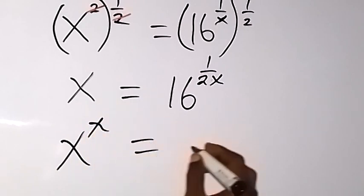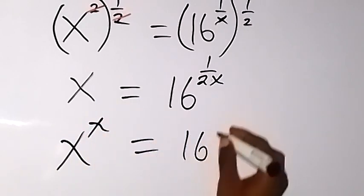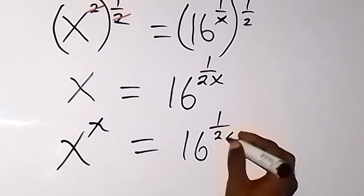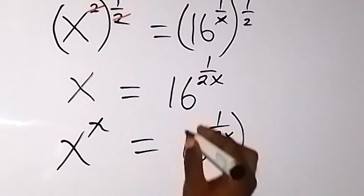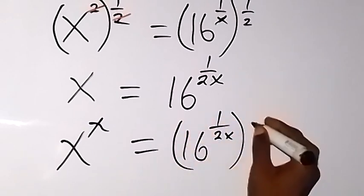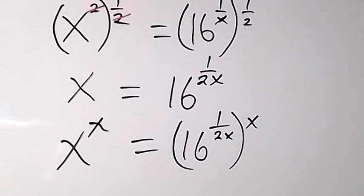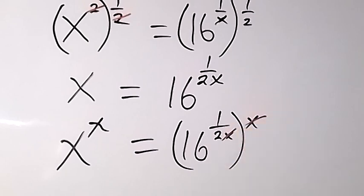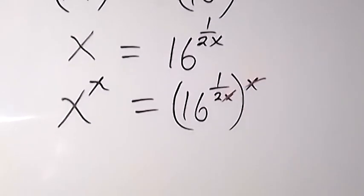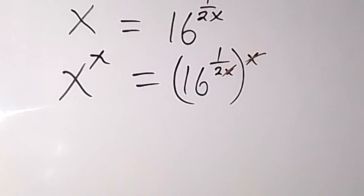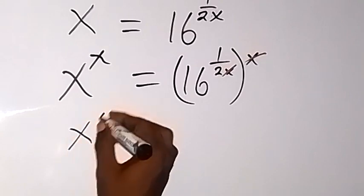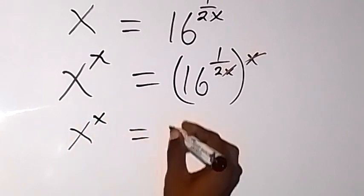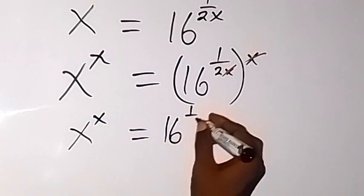Then equals to 16 raised to power 1 over 2x, then raised to power x. From here, the x cancels each other, and we are left with x raised to power x equals to 16 raised to power half.